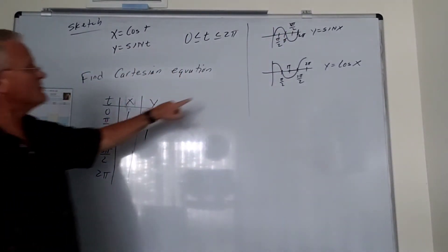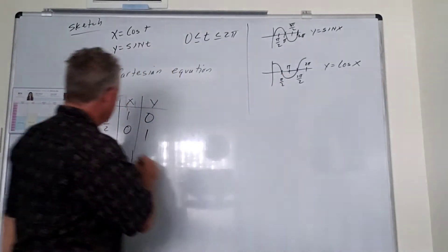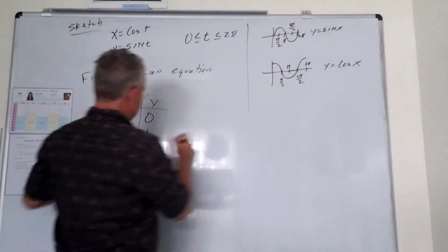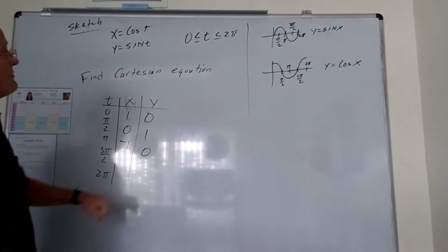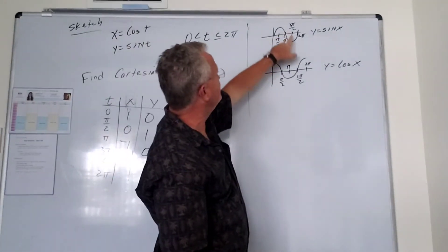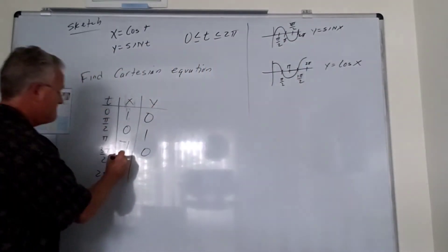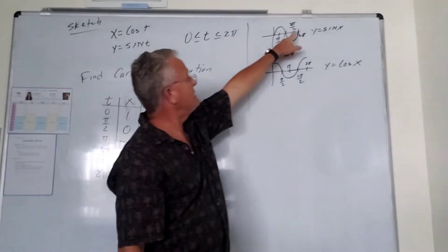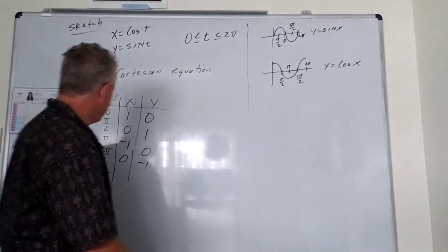At pi, the cosine of pi is negative 1, the sine of pi is 0. At 3 pi over 2, sine is negative 1, cosine is 0. And at 2 pi, sine is 0, cosine is 1.